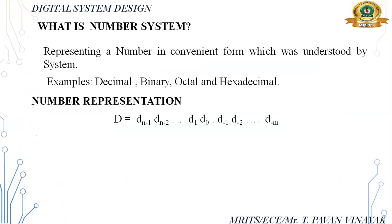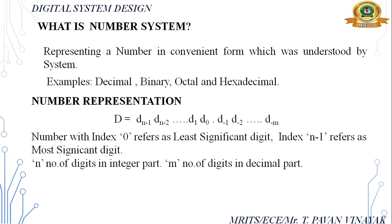Number representation — how we represent a number. Suppose D is a number; we have digits D(n-1) to D(0). After the dot is the fractional part; before the dot is the integer part. The index zero is referred to as the least significant digit, and D(n-1) is the most significant digit. The number of digits in the integer part is n, and in the decimal part is m.